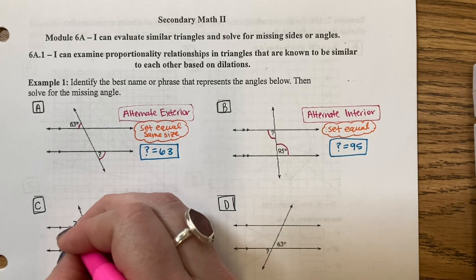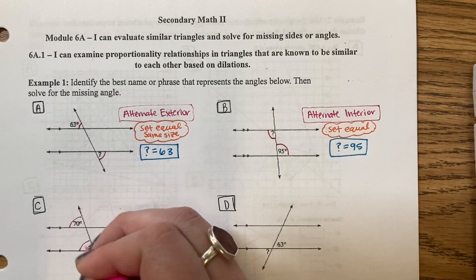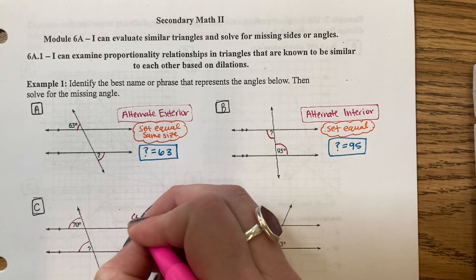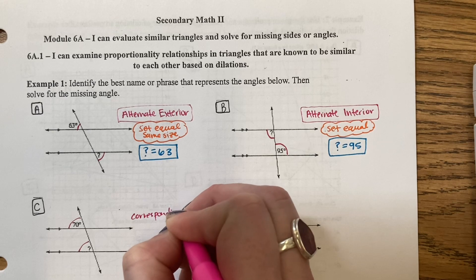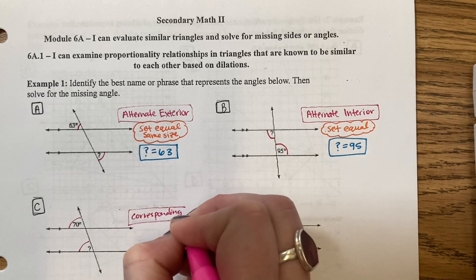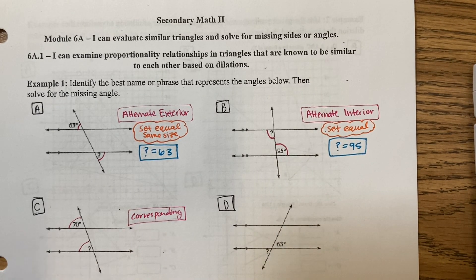Next, I have that top left corner. Top left corner, they're in the same spots. Those are called corresponding. They are also the same size, so I will set them equal.